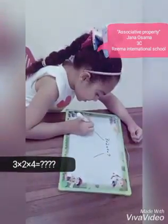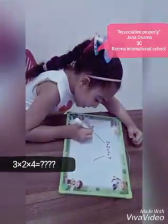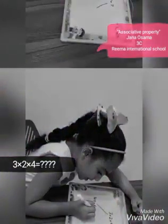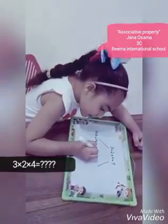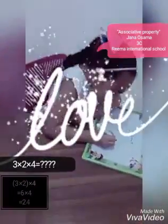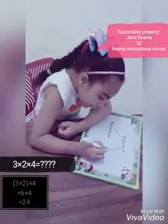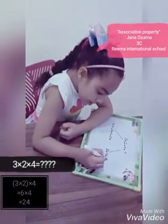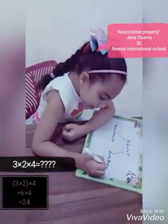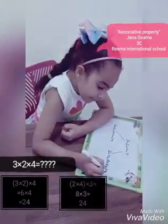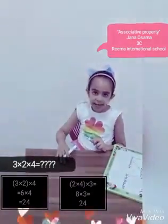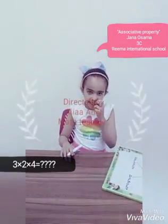First way: 3 multiply 2 equal 6, multiply 4 equal 24. Second way: 2 multiply 4 equal 8, multiply 3 equal 24. So change the factors and get the same result. Thank you!